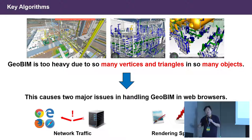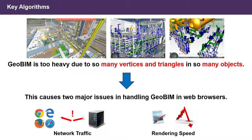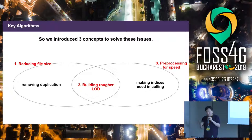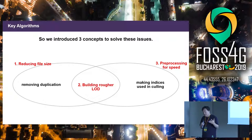Let's talk about F4D, a newly devised format just like 3D Tiles. If you want to visualize very large and complex data through the web, there are three problems: lots of vertices and triangles, we need to reduce network traffic, and we need to increase rendering speed simultaneously. The solutions are: reduce the file size, build multiple levels of detail, and pre-process data to increase speed.